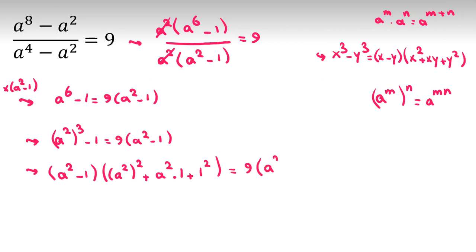I want to use a squared minus 1 times a to the 4 plus a squared plus 1 equals 9 times a squared minus 1. We know a squared minus 1 cannot be 0 because it is in the denominator.